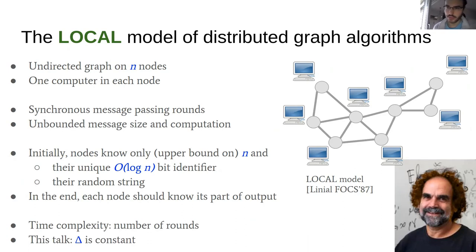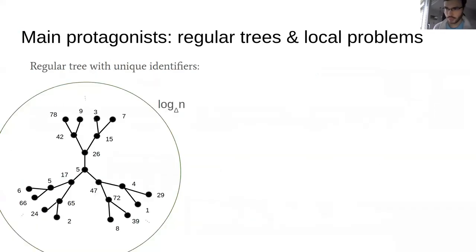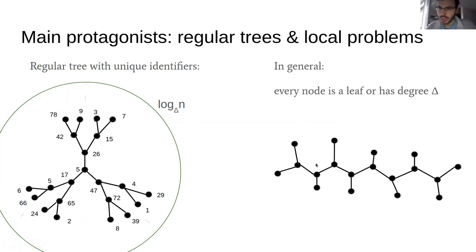In this talk we will further restrict our attention to constant degree graphs, and even more we will restrict to regular trees. A regular tree is a tree where every vertex has either degree delta or it is a leaf. So we restrict our attention to these trees to make things simple.